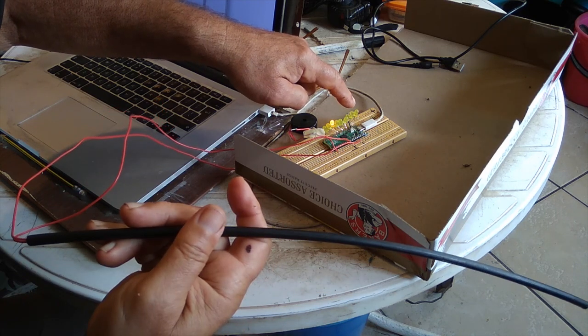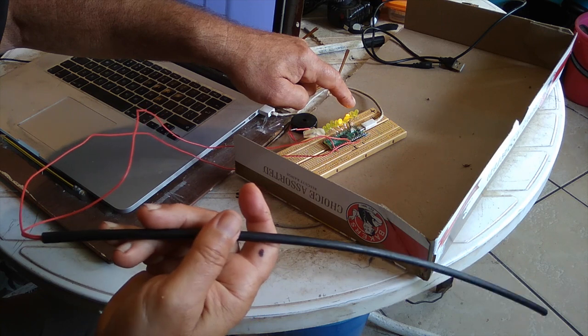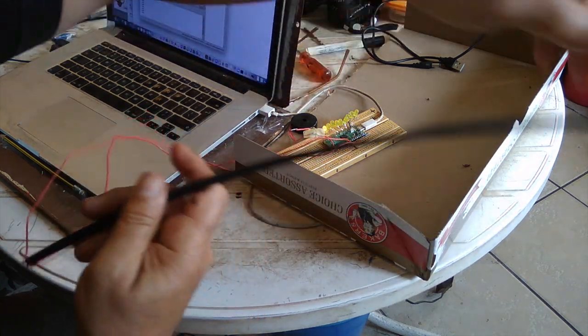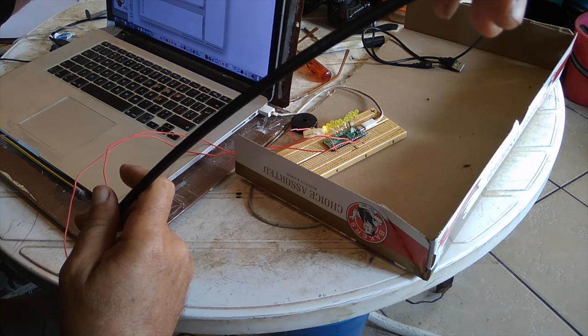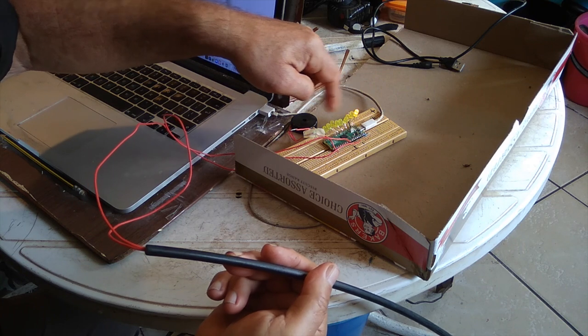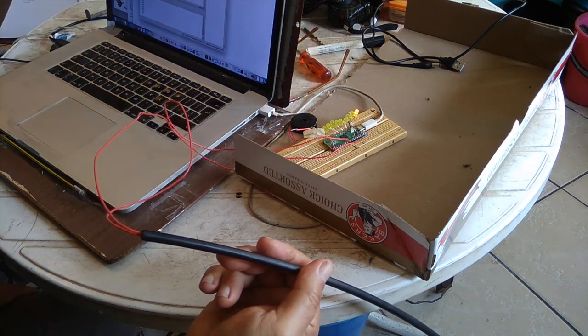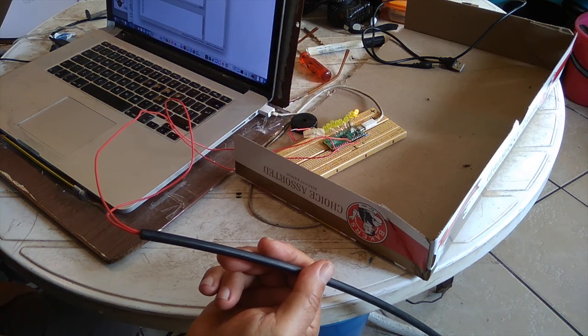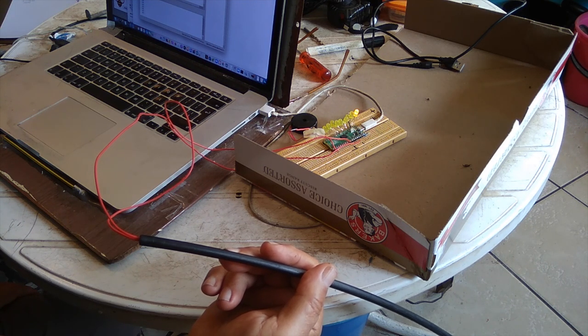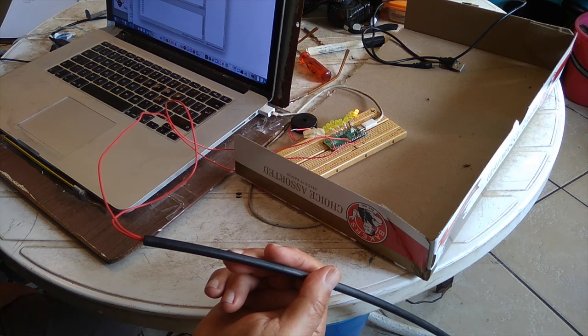So by the amount that you raise or lower the wand, you increase the brightness that this little light-dependent resistor is picking up. And that changes the note that you play. So you can play tunes by pointing the wand at a light or a dark patch.